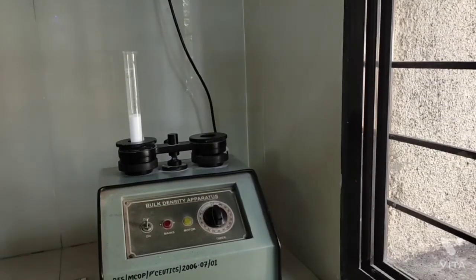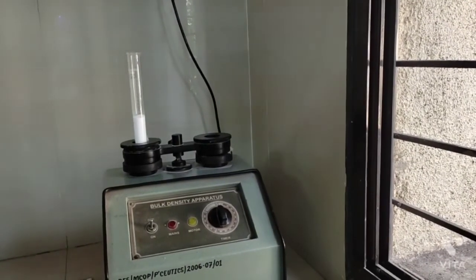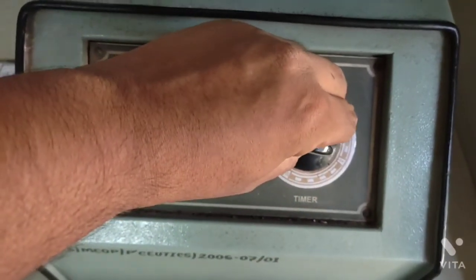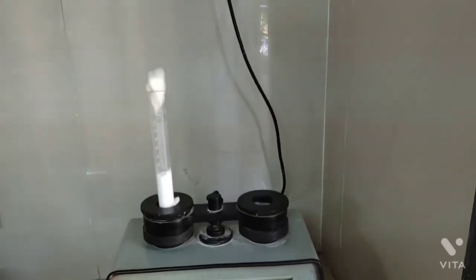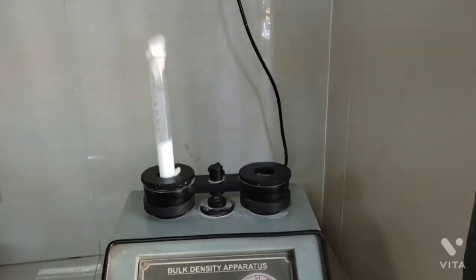Place that measuring cylinder on bulk density apparatus and start tapping it. After tapping the powder, mark the volume which means tap volume.